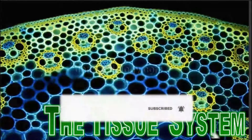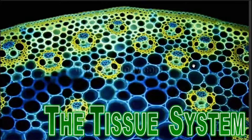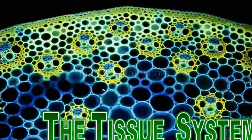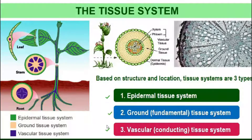The topics to be covered in this session are: the tissue system, epidermal tissue system, ground tissue system, and vascular tissue system. These topics are from the lesson anatomy of flowering plants. Let us see one by one what are the three important tissue systems found in plants.